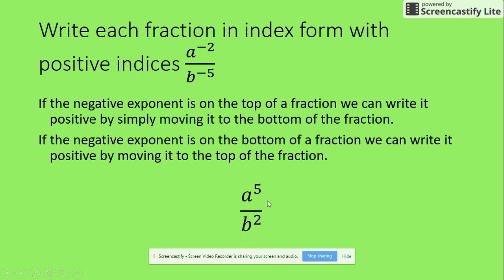So your answer is going to look like this: A to the power of 5 is positive and B to the power of 2 is positive. So we've switched them over. As soon as they cross the line, they change from negative to positive.